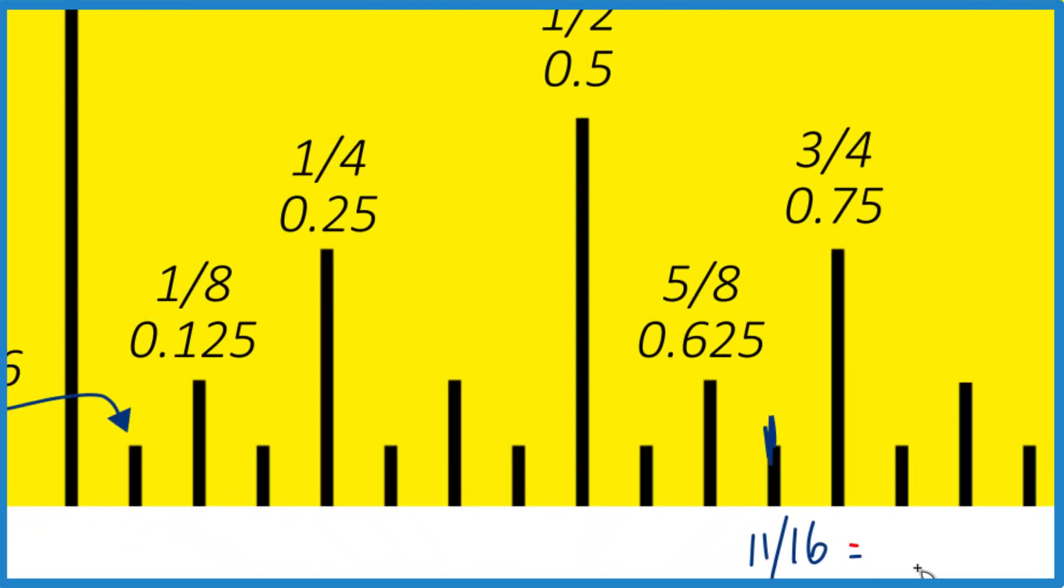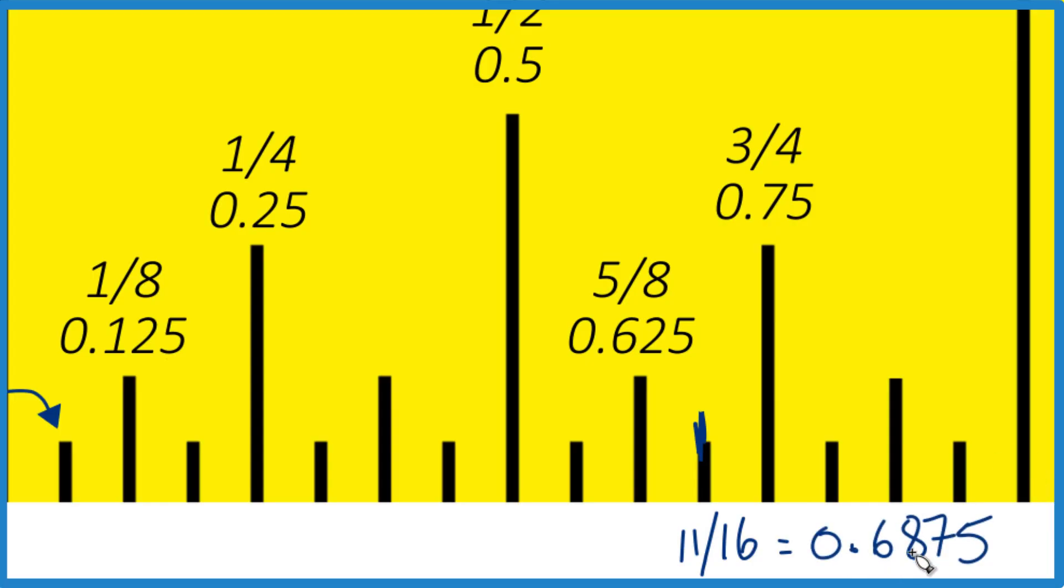If you convert that to a decimal, you get 0.6875. Pretty close. So I would say we're right about here on our ruler or tape measure. Just a little bit past this 11 sixteenths of an inch. That's where you're going to find seven tenths of an inch.